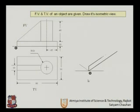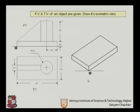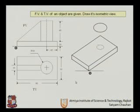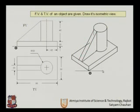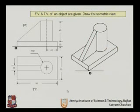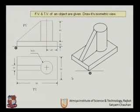For the final problem, similar to the earlier one, we have a base plate, a vertical cylinder, and a rib section. We rub all the non-required lines to produce the complete isometric view. This completes our session covering regular problems involving simple geometry in isometric drawing.